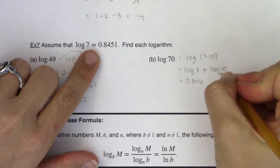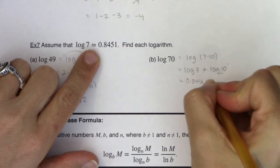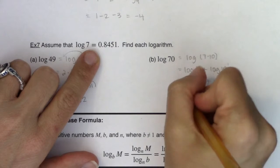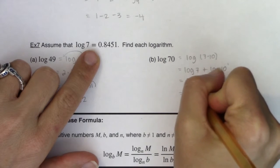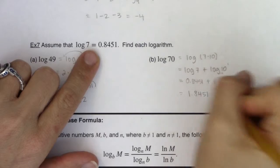Alright, don't forget this is common log, so log base 10 of 10 to the first power is just 1. So this answer will ultimately be 1.8451.